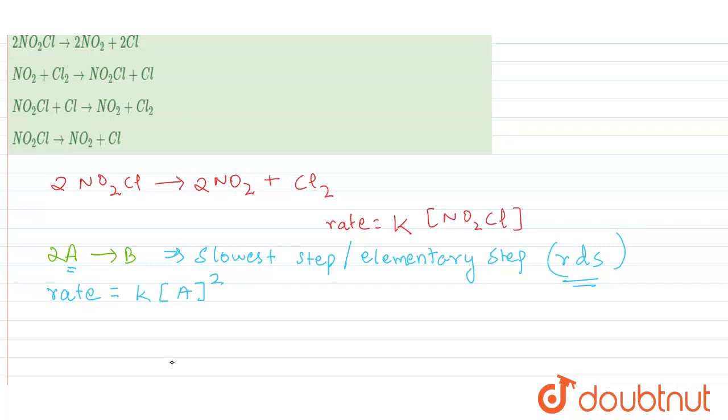And now over here it is given the rate is equal to K times NO2Cl. But here we have 2 as the stoichiometric coefficient. So this equation can be divided by 2, or you can say can be multiplied by half.